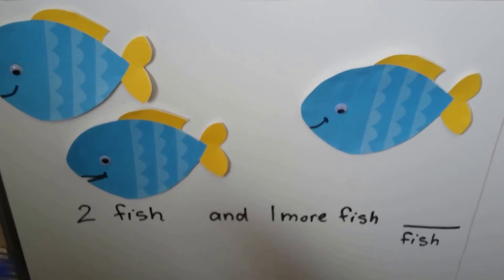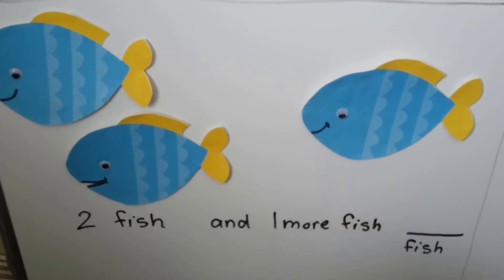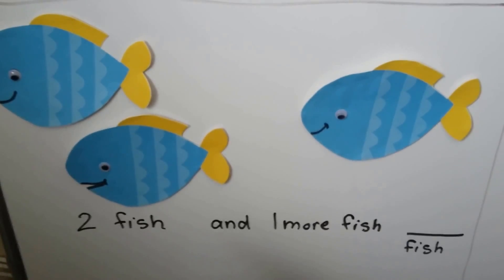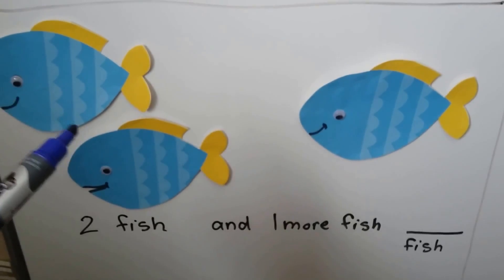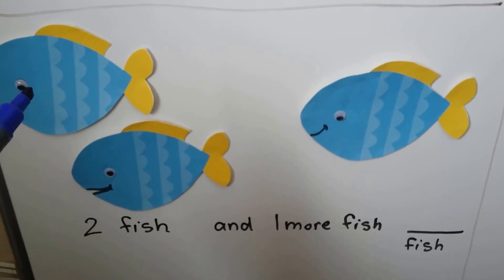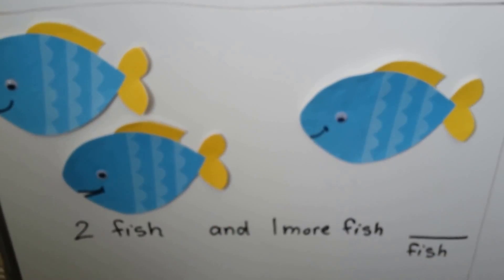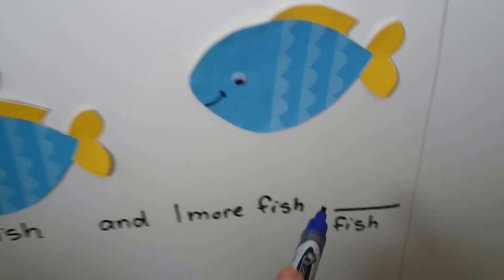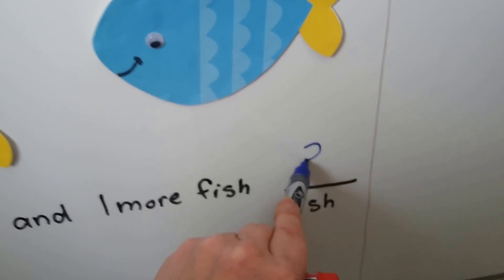Here we have two fish. One, two, and one more fish. We can count the pictures or even draw our own to see how many there are in all. One, two, three. Three fish. We put a three on the line.